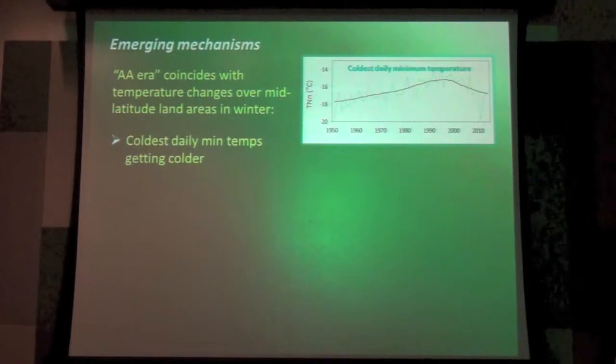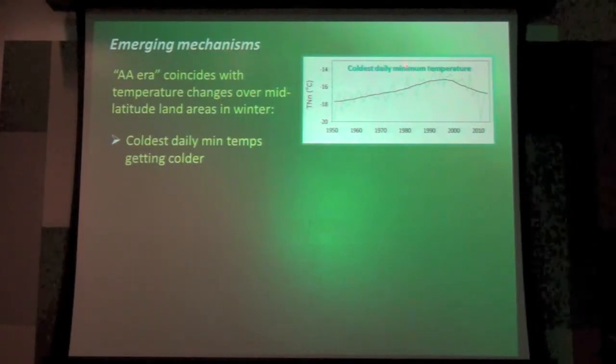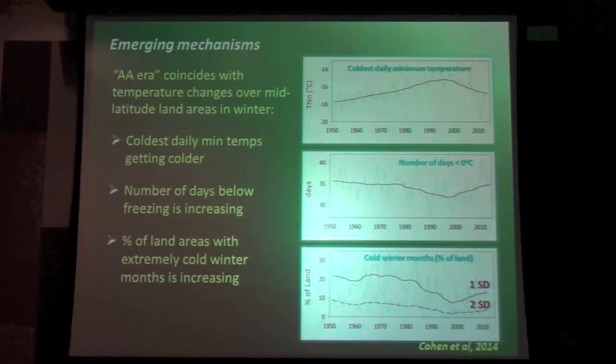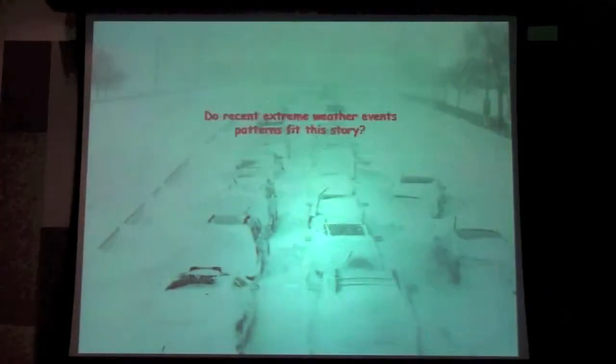Coincident with this, we're seeing changes over the northern hemisphere continent, over the land. We're seeing the coldest daily minimum temperatures starting in the 1950s, over land areas, we were starting to see that temperature increase because of increasing carbon dioxide in the atmosphere. But just recently, as the sea ice has disappeared and as Arctic amplification has kicked in, we see this number is going down. So the minimum temperature over the continents has decreased. Along with that, the number of days over the continents below freezing has increased. Same thing. It was starting to decrease because of global warming, but most recently, we're seeing an uptick, and we're also seeing an increase in the areas of land with cold winter months. So this is all adding up to the same thing.